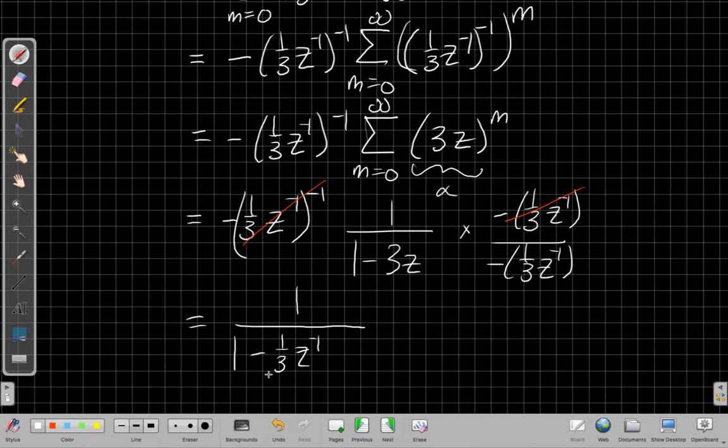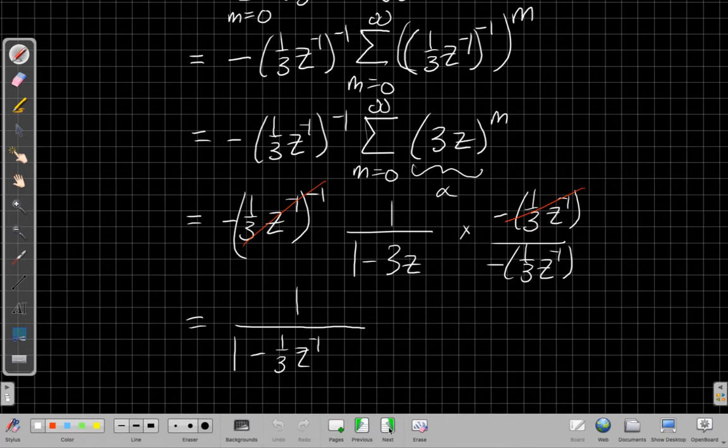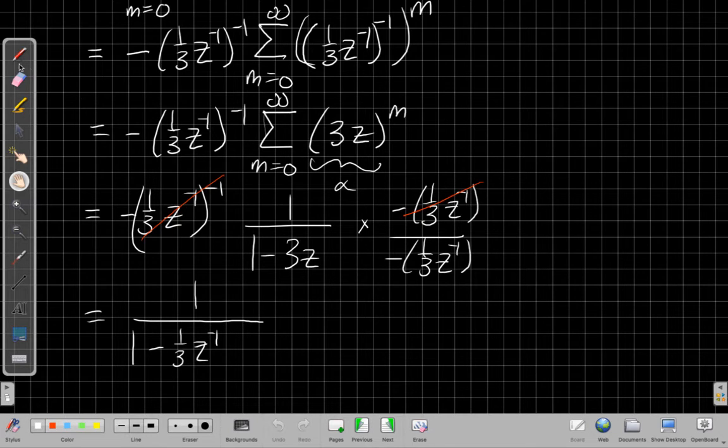I end up with 1 over 1 minus 3z to the minus 1, which at first is confusing because you say that's the same thing we saw in the last video. It's the same expression for z. Here is the key, though. We say, well, when I did this infinite geometric sum, I sort of ran right past it. I forgot to say, when does this converge? What values of z make alpha less than 1? So if I'm going to clean that up now as the exciting conclusion to our story here.